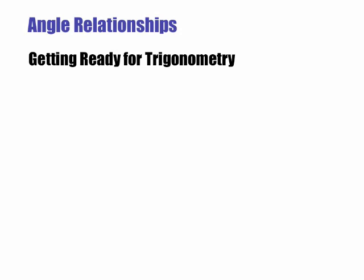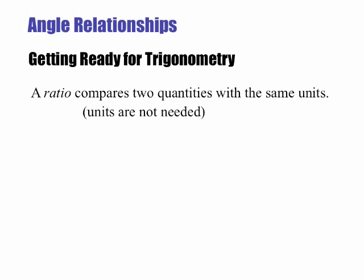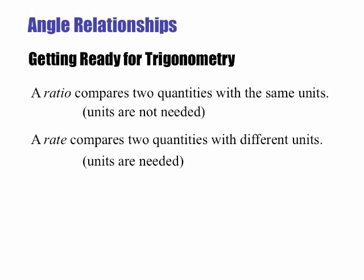Angle relationships. Angle relationships, getting ready for trigonometry. A ratio compares two quantities with the same units. Because we are looking at the same units, units are not necessary in our result. A rate compares two quantities with different units. Because we are looking at different units, units are needed.